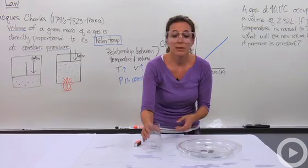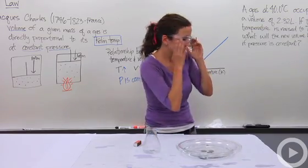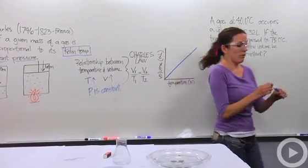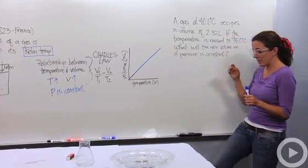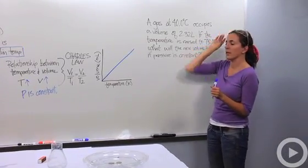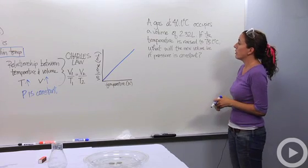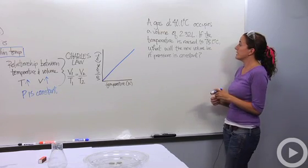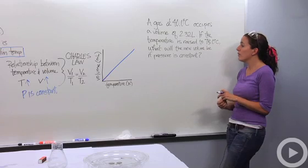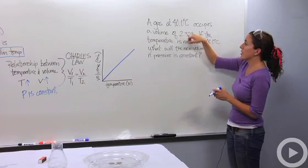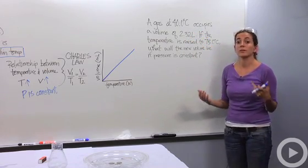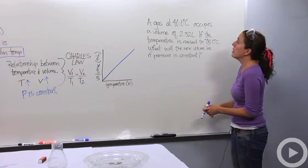So let's do a problem that you might see in class. A gas at 40 degrees Celsius occupies a volume of 2.32 liters. If the temperature is raised to 75 degrees Celsius, what will the new volume be if the pressure is constant? So I'm dealing with temperature and volume. So I know in my head that's Charles' Law. It also deals with temperature in Kelvin. So I want to make sure I change these temperatures to Kelvin.